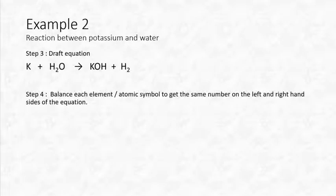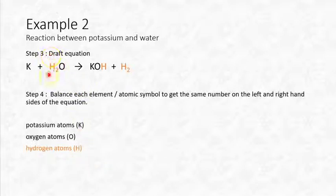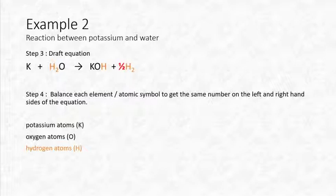Draft equation: K + H₂O → KOH + H₂. Let's balance: potassium — one on each side, balanced. Oxygen — one on each side, balanced. Hydrogen — two in the H₂O on the left, but two in H₂ plus one in KOH on the right, so that doesn't balance.